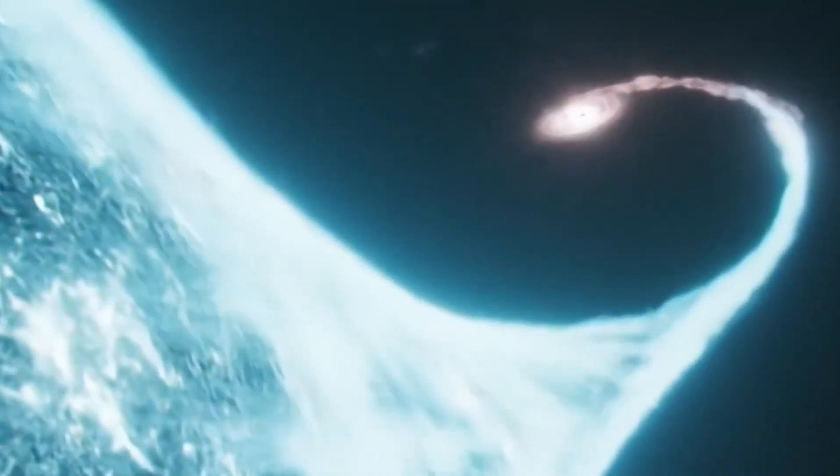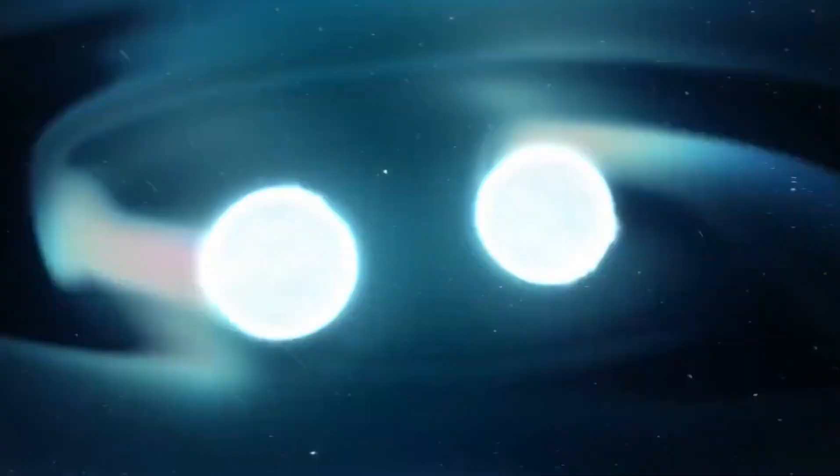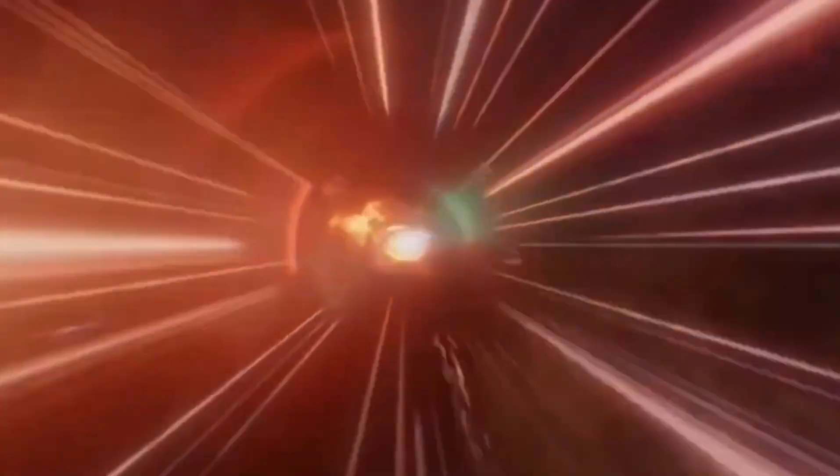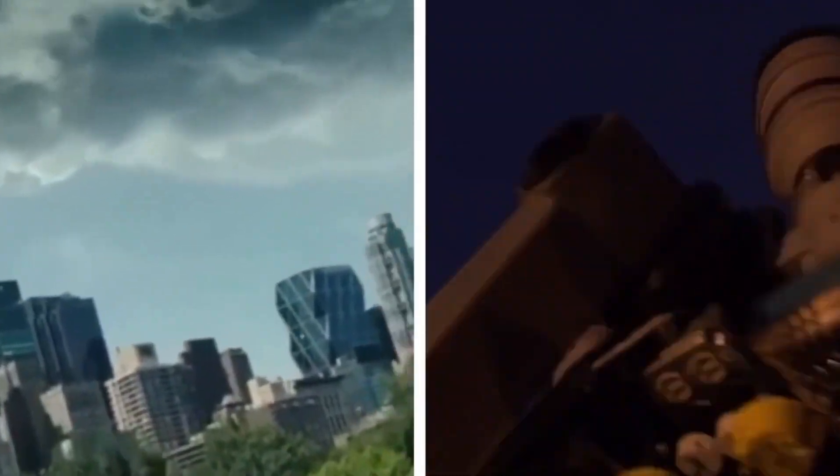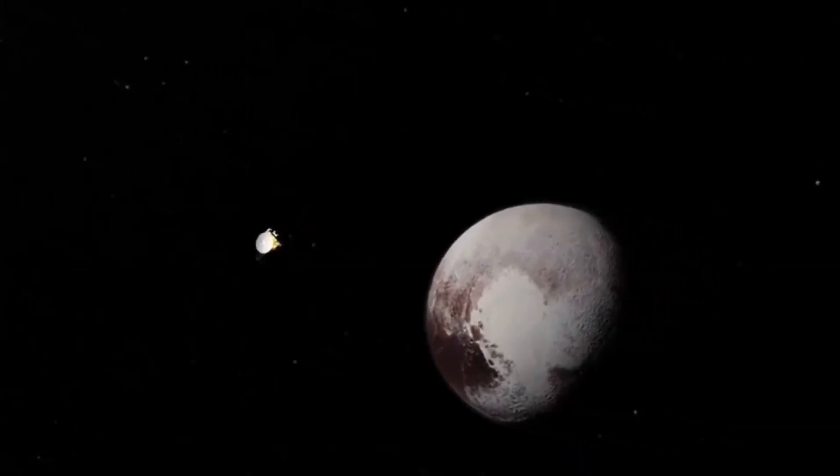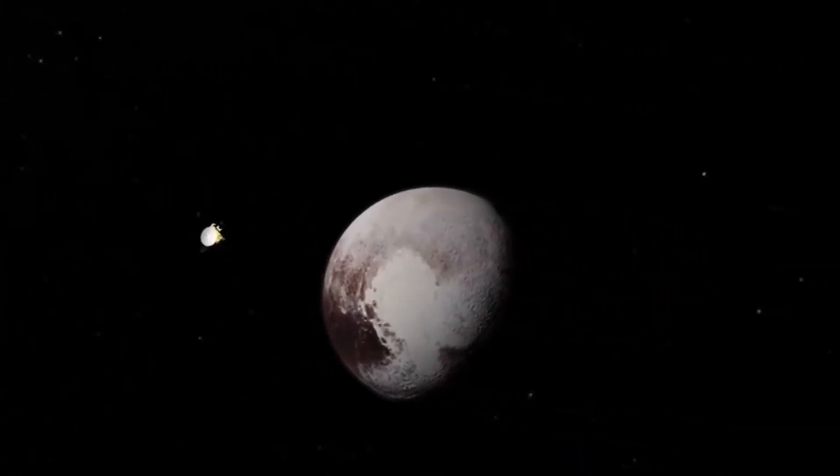Additionally, the vast distance between Voyager 1 and Earth poses challenges, with signals taking up to 21 hours to travel. Weak signals, combined with interference and temperature extremes, create obstacles to successful data transmission.